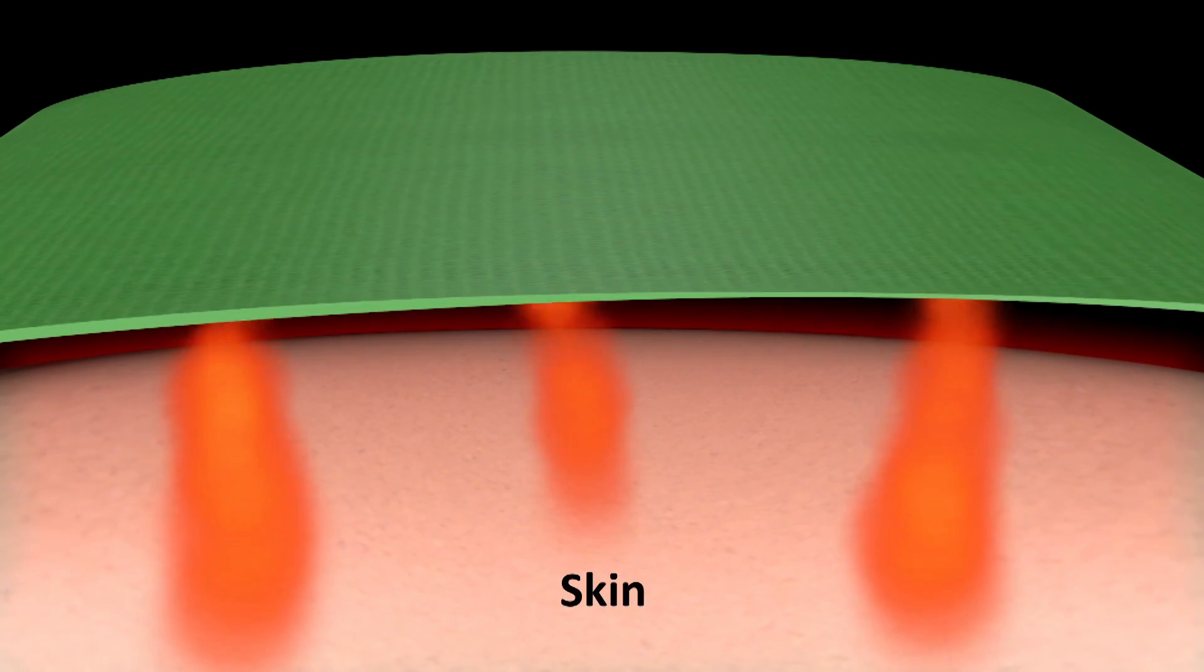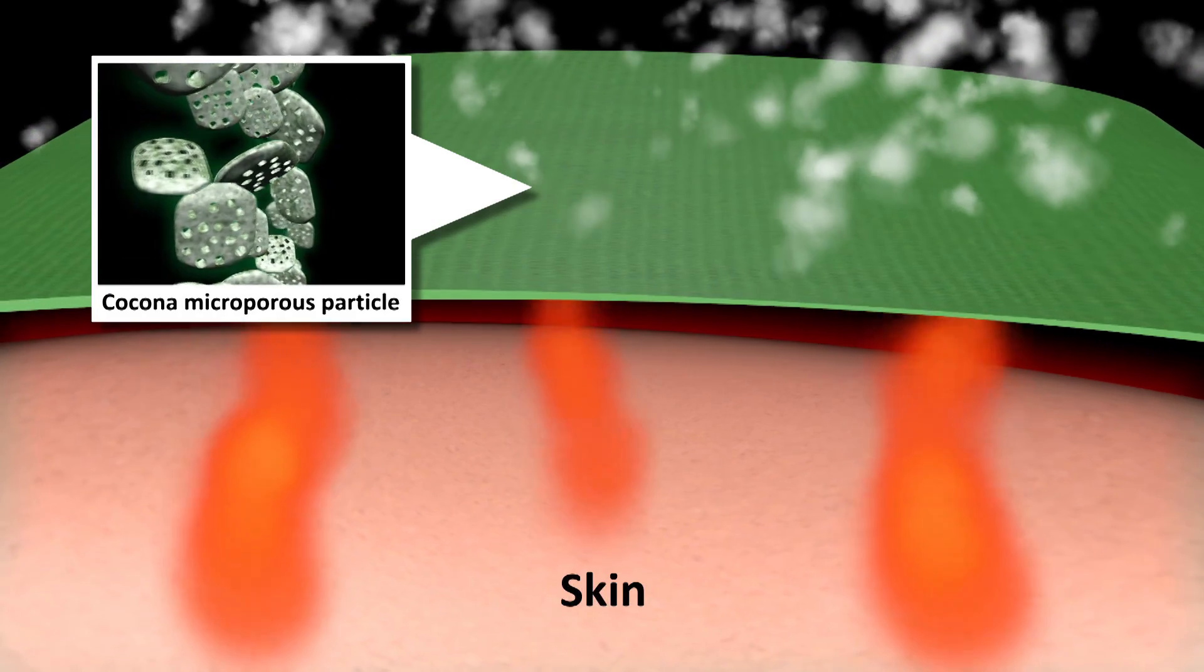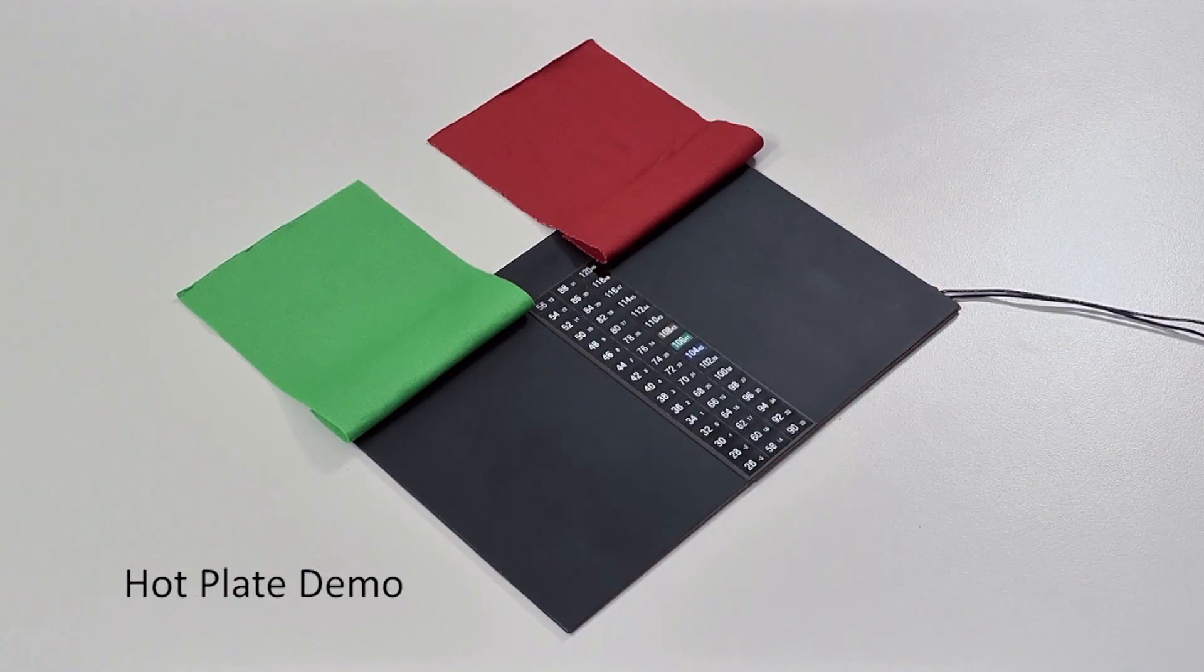Kokona has special active particles which harness the body's natural energy to speed up the evaporation process. Here's a demonstration of how it works.